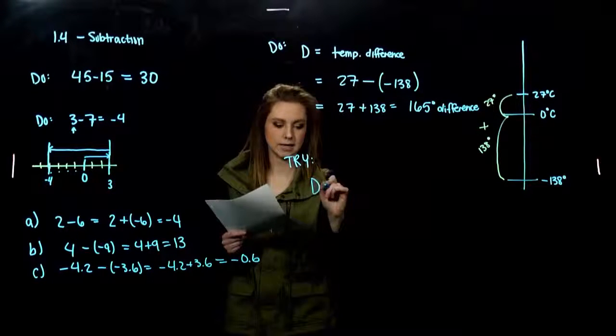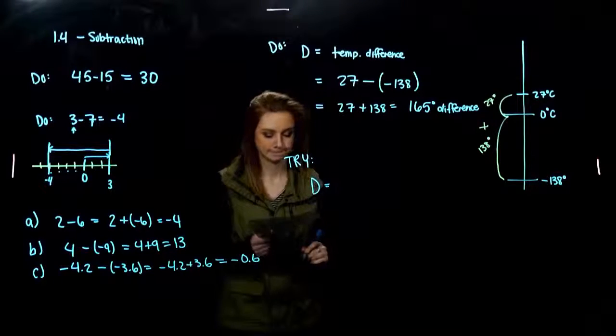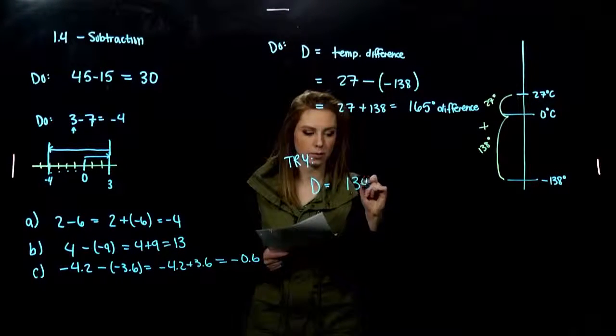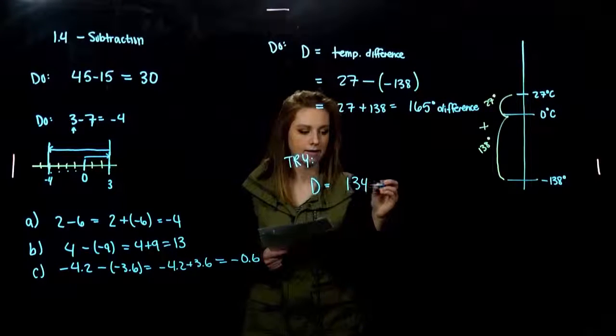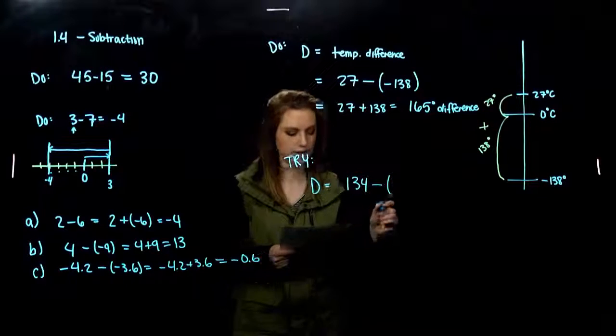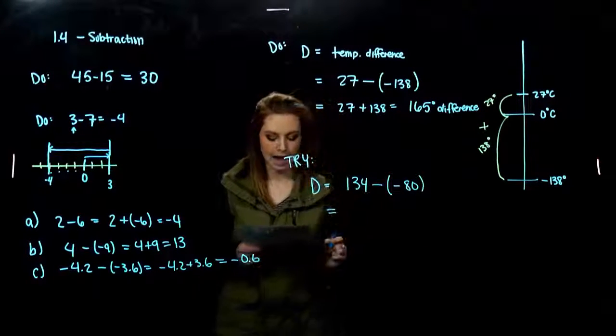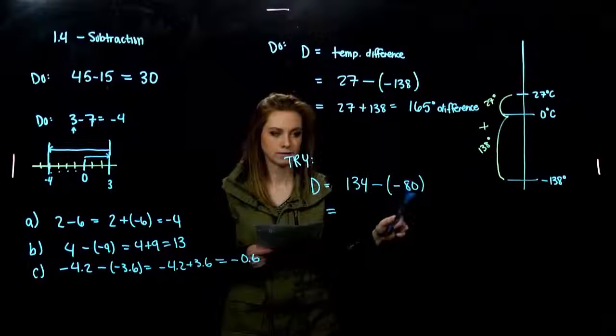So, I'm going to let D be the temperature difference again. The highest temperature that we had was 134 in California. And, we're trying to find the difference between that and the lowest temperature in Alaska, negative 80. So, how much higher was this temperature than this one?